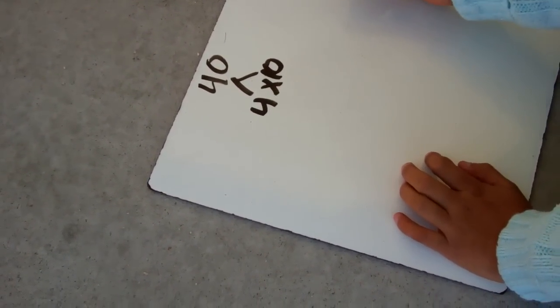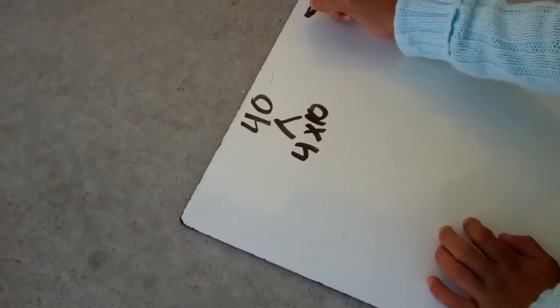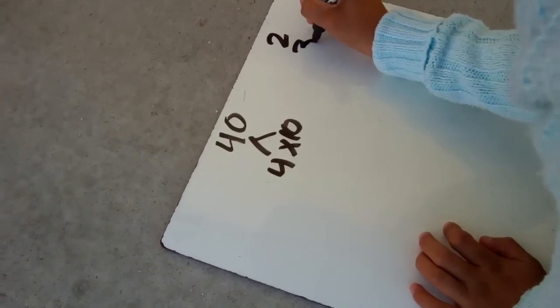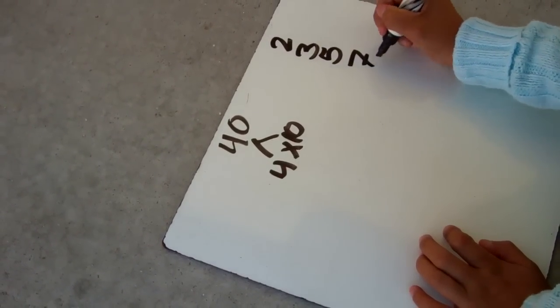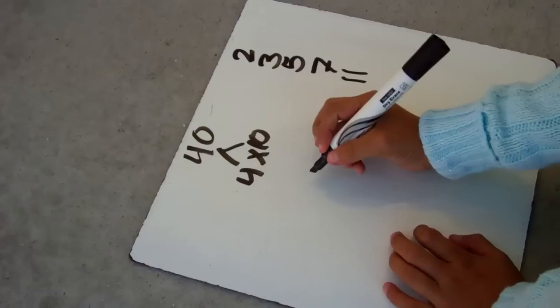And then first you have to put your prime numbers, which for example is 2, 3, 5, 7, and 11. And then you see that none of them are prime numbers,